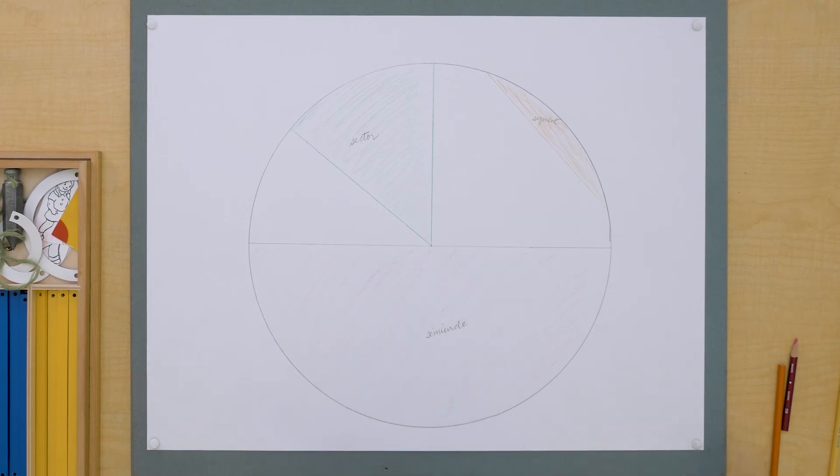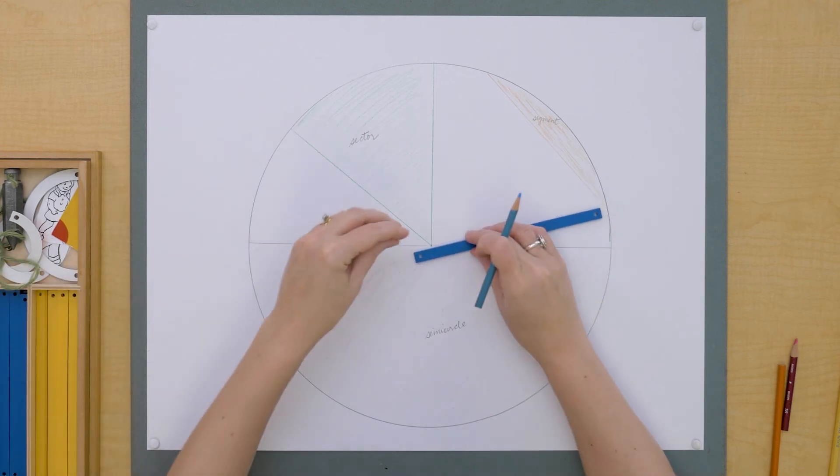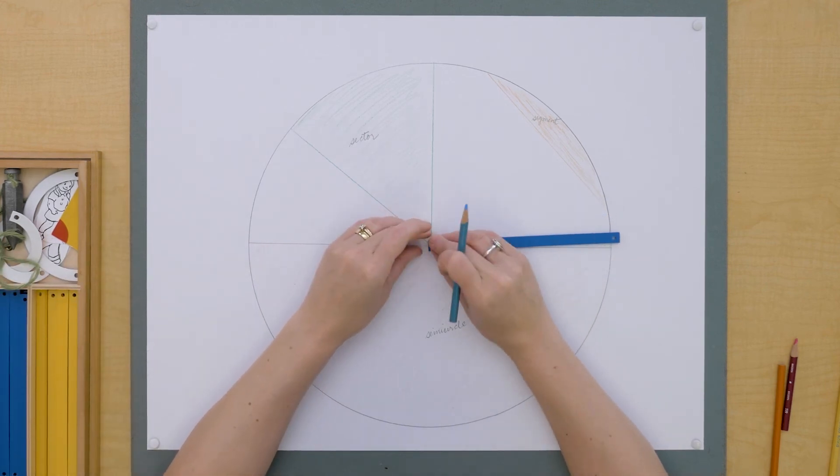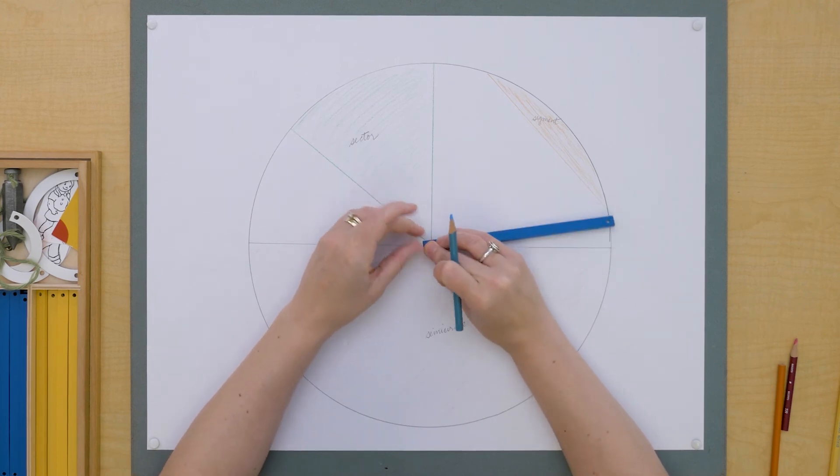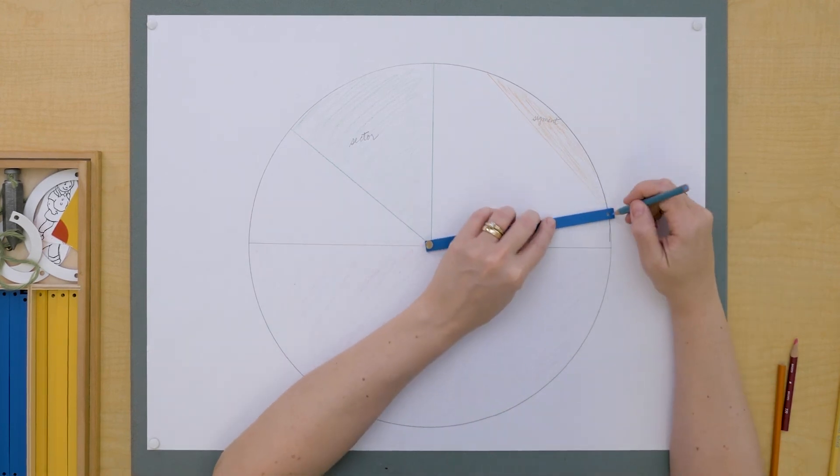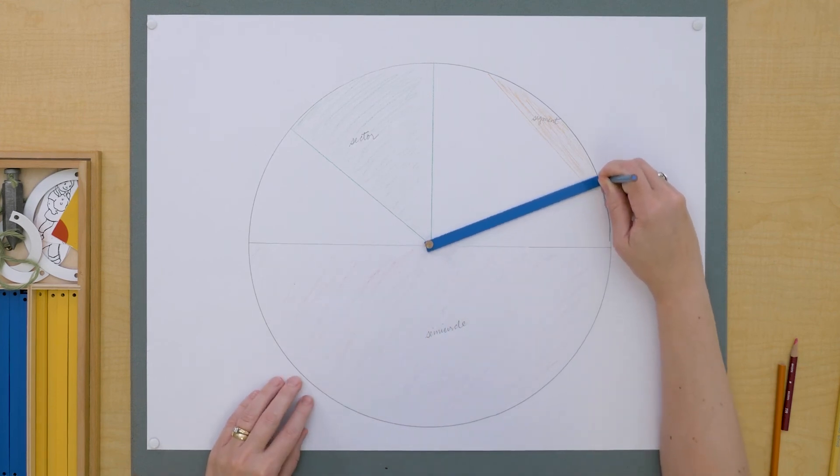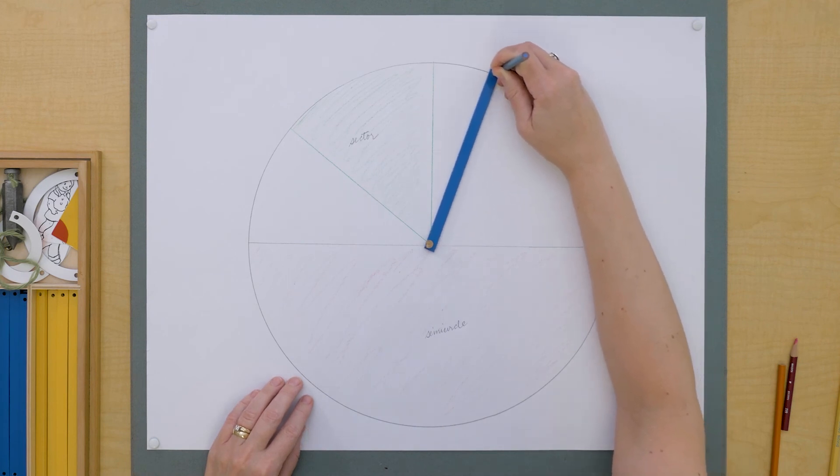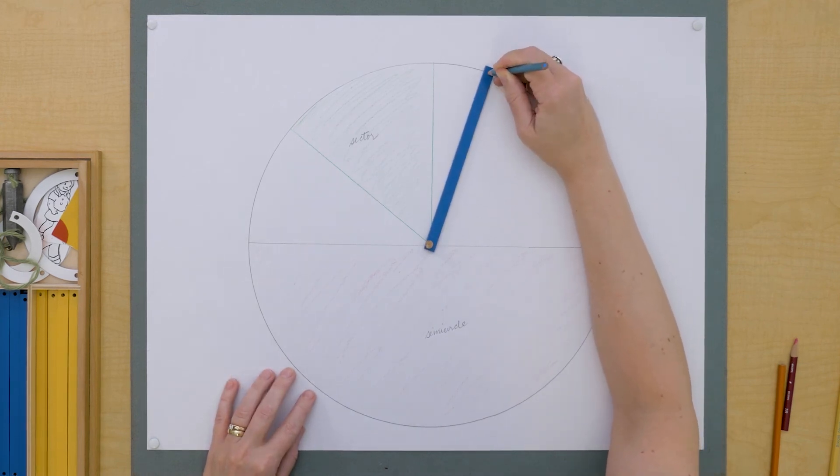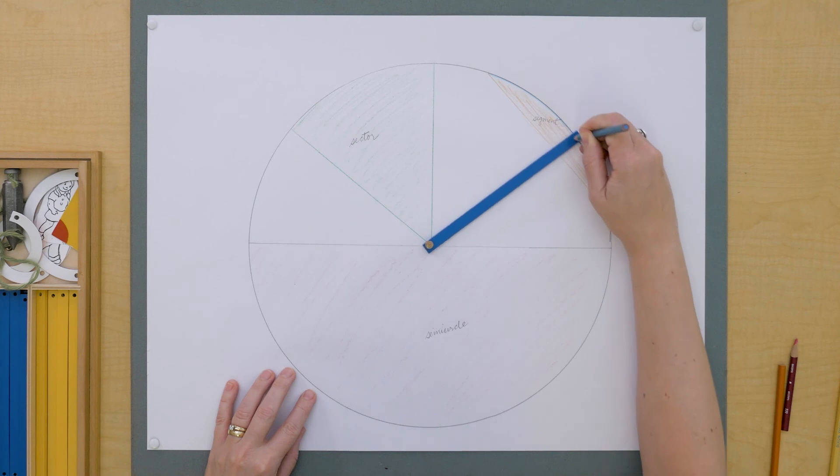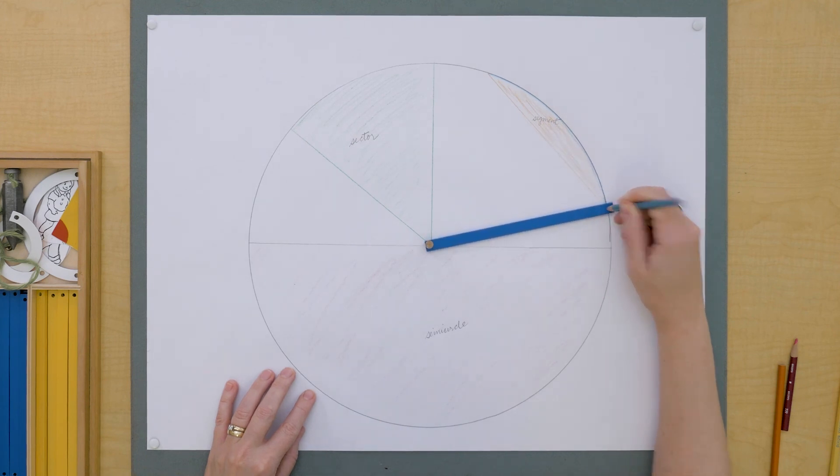And then one last thing. This part of the circumference that is just stopped, just a portion of it, this is called an arc.